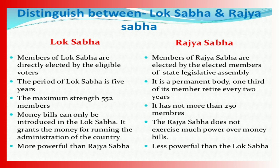Now let us look at the distinctions between Lok Sabha and Rajya Sabha. Members of the Lok Sabha are directly elected by eligible voters, while members of Rajya Sabha are elected by the elected members of State Legislative Assemblies. The term of Lok Sabha is 5 years, whereas Rajya Sabha is a permanent body with one third of members retiring every two years. The maximum strength of Lok Sabha is 552, while Rajya Sabha has not more than 250. Money bills can only be introduced in Lok Sabha; Rajya Sabha does not exercise much power over money bills. Overall, Lok Sabha is more powerful than Rajya Sabha.